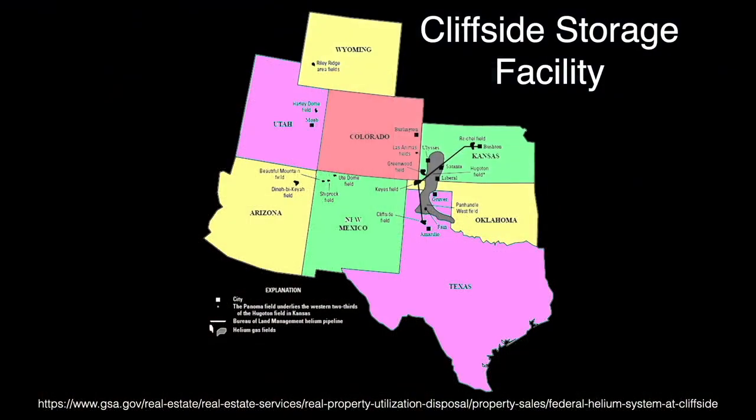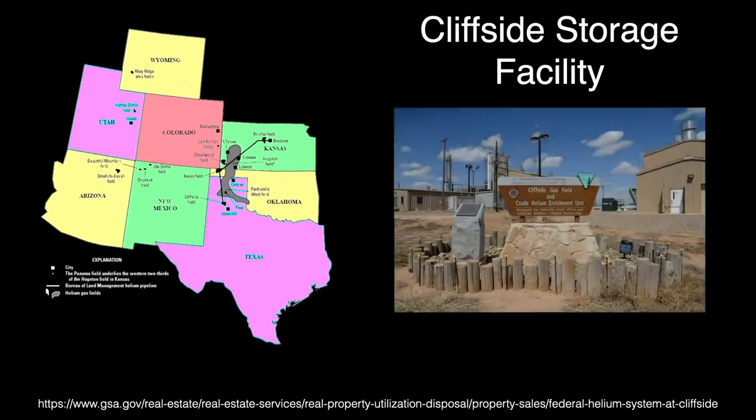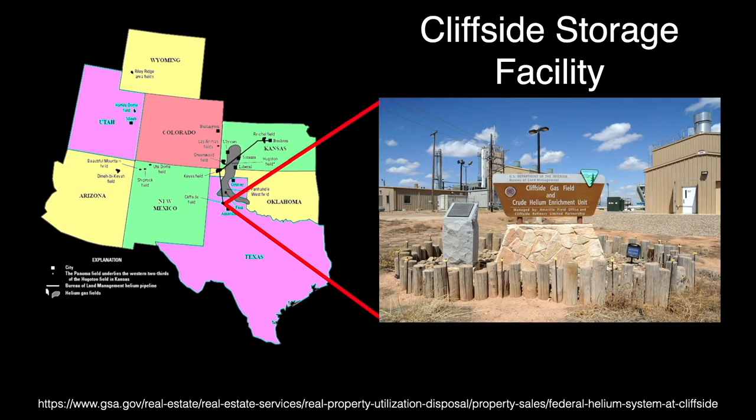We now purify that helium and store it 3,000 feet underground at the cliffside storage facility near Amarillo, Texas. This is the United States Strategic Helium Reserve, which stores about 1 billion cubic meters of helium.